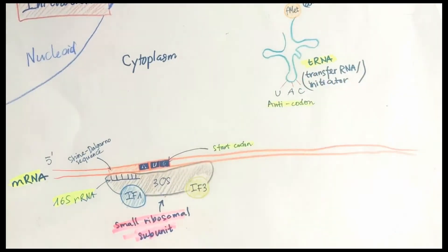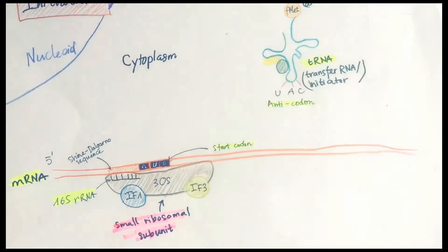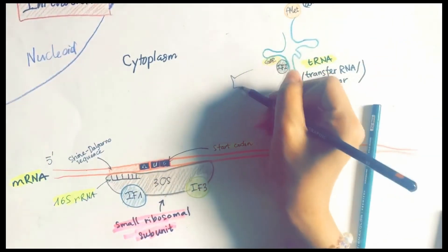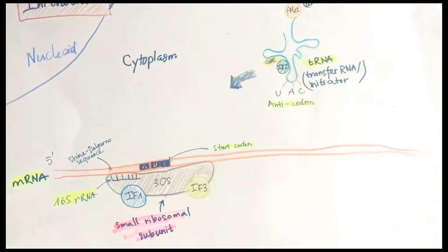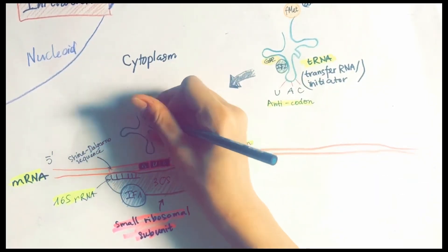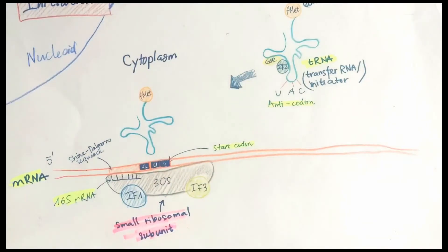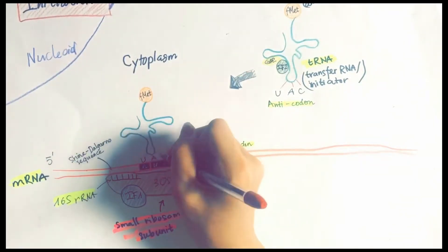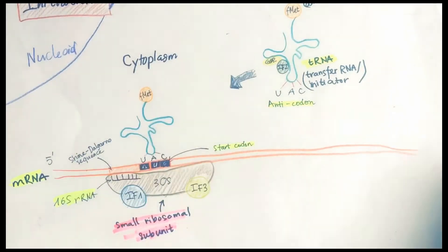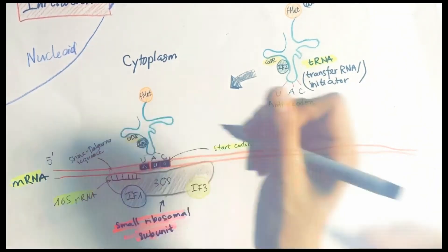In the next step, IF2 promotes the binding of tRNA-fMet to the mRNA already bound to the 30S subunit. The tRNA-fMet binds to the start codon, which is typically a few nucleotides after the Shine-Dalgarno sequence. The tRNA-fMet binds to the P-site on the ribosome.